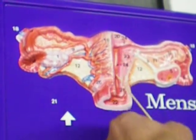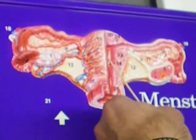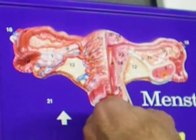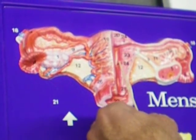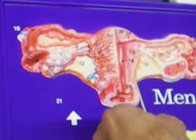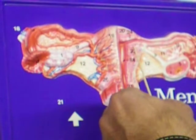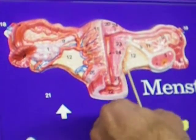This is the body of the uterus, and the uterus has three layers: the inside layer, which is called the endometrium; the thick muscular wall, which is called the myometrium; and the outer layer, which is called the perimetrium.